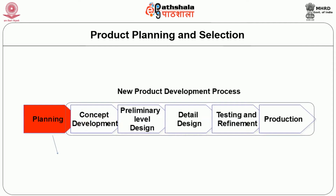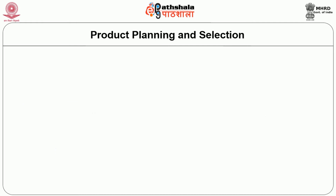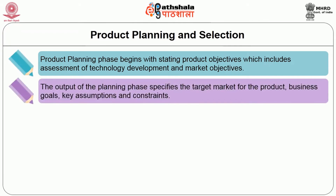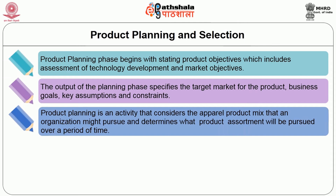Product planning and selection. The flowchart shows the new product development process. The product planning phase precedes the product development process. The product planning phase begins with stating product objectives, which includes assessment of technology, development, and market objectives. The output of the planning phase specifies the target market for the product, business goals, key assumptions, and constraints. Product planning is an activity that considers the apparel product mix that an organization might pursue and determines what product assortment will be pursued over a period of time.